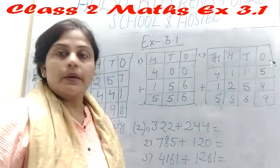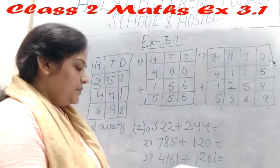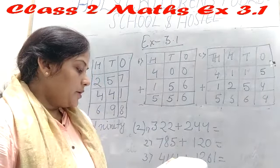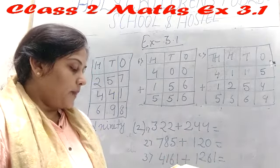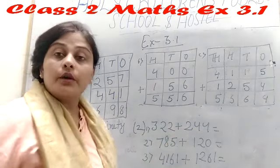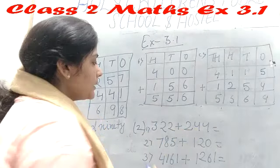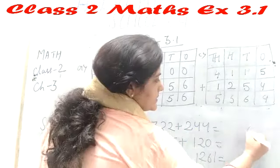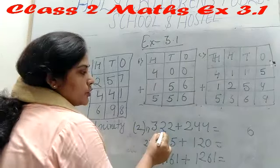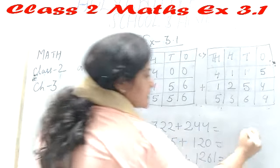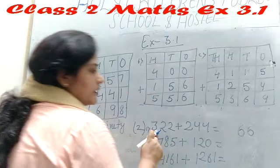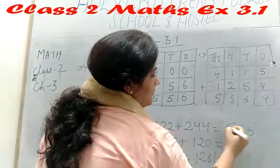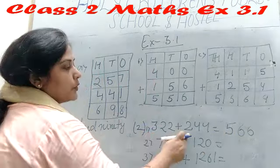Our next topic is fill in the blanks. 322 plus 244 equals blank. We can add this sum. 2 plus 4 equals 6. 2 plus 4 again equals 6. And 3 plus 2 equals 5. When we add both numerals, our result is 566.